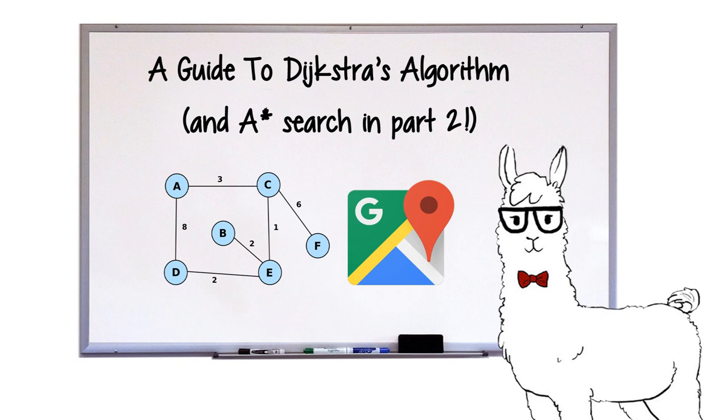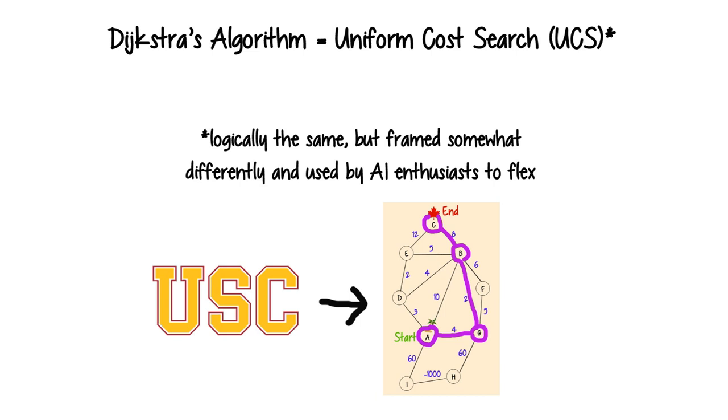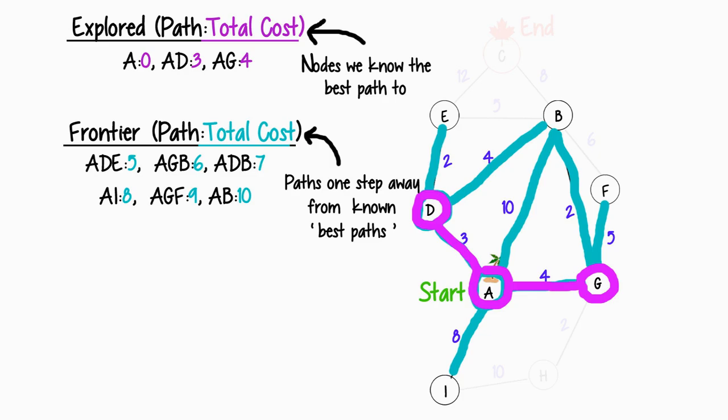Lastly, if you do any AI, you might also hear Dijkstra's be called a UCS, or Uniform Cost Search. It's pretty much the same thing. Of course, this is not to be confused with USC, which also finds the shortest path, but only if you're looking for an admission scandal.